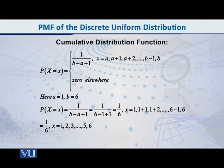Now, this is what we have seen in PMF, and you are seeing it on the screen. In this case, you put its values. 1 over b minus a plus 1. That is 1 over 6 minus 1 plus 1. So, how much is that? 1 over 6.